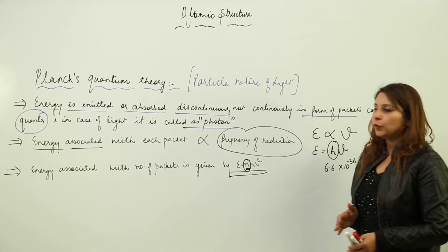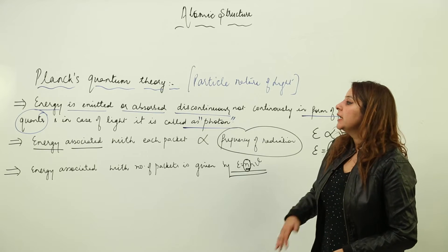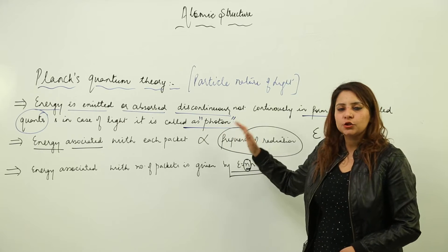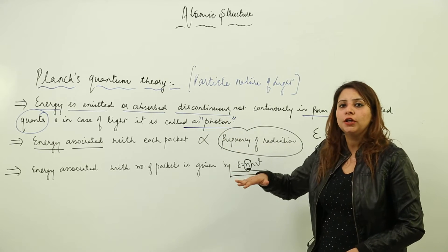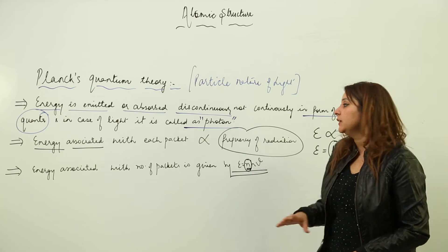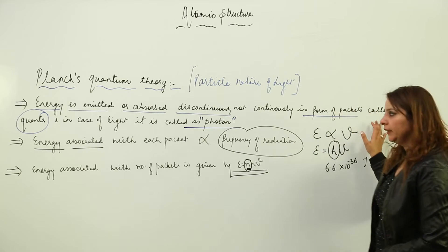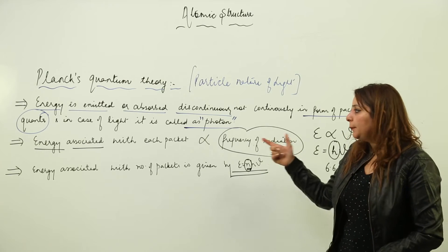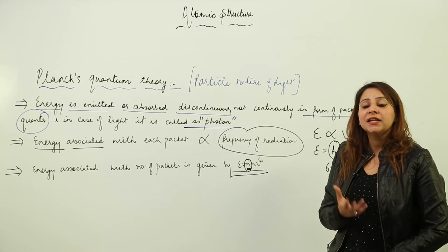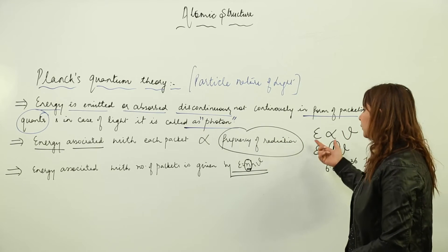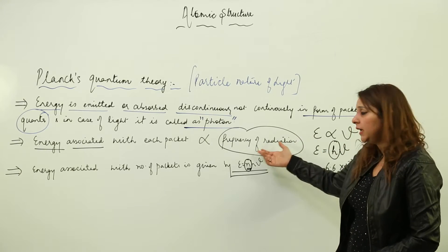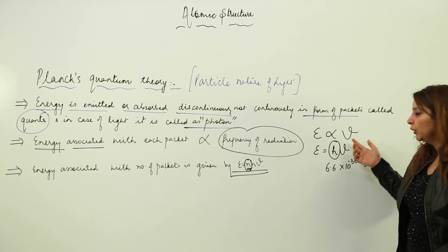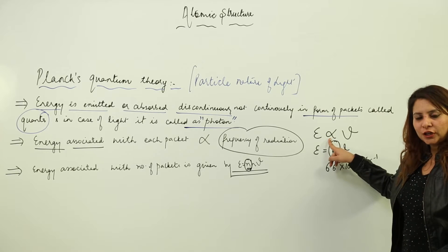As you all know about Planck's quantum theory, energy is emitted or absorbed discontinuously in the form of packets called quanta, and in the case of light the packet is called a photon. Each packet has a certain amount of energy. The energy associated with each packet depends upon the frequency: E is proportional to ν, and removing the proportionality sign we put a constant.